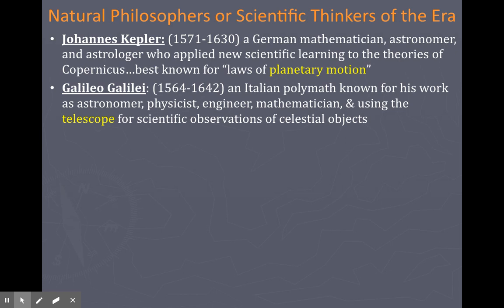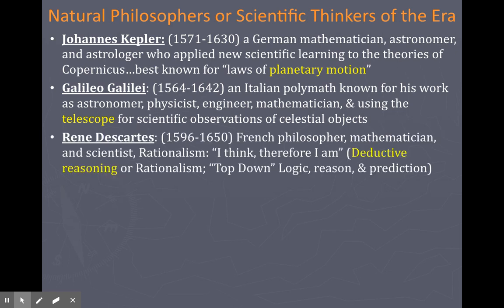Galileo got in trouble with the church and was under house arrest for a long time. This was right during the Reformation era, bleeding into the scientific revolution. You can see a crossover where so many people were challenging church doctrine — the church was saying God made the earth as the center of his creation, and therefore the sun had to go around the earth. Galileo said he had the proof that the church was wrong, and got into trouble for it.